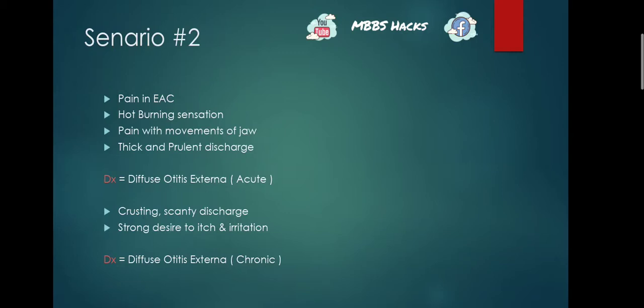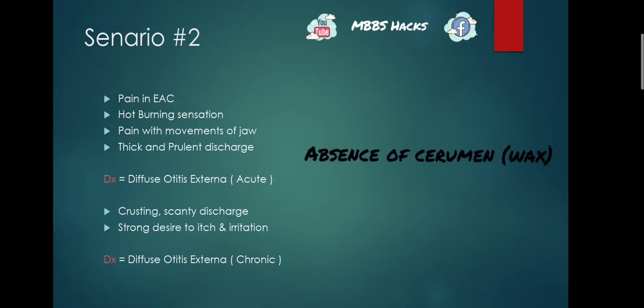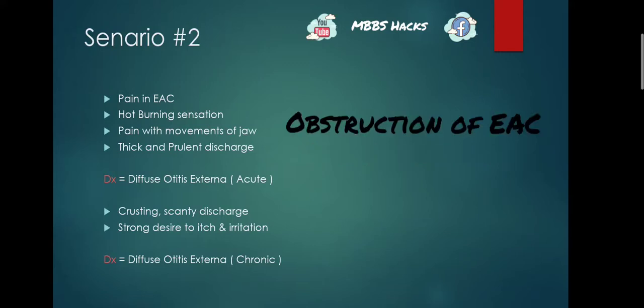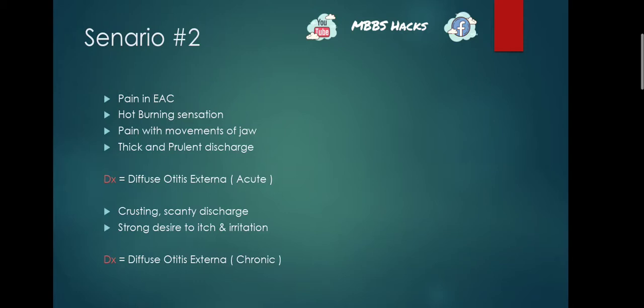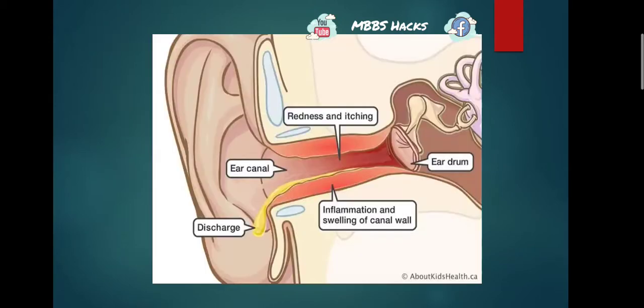Diffuse otitis externa is most commonly associated with trauma, absence of cerumen, and obstruction of the external auditory canal, which leads to bacterial overgrowth. Bacterial overgrowth causes inflammation, which causes neutrophil recruitment. Neutrophils and bacteria combine to form pus — the purulent discharge that comes out of the ear.